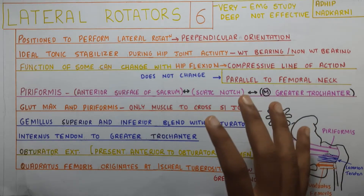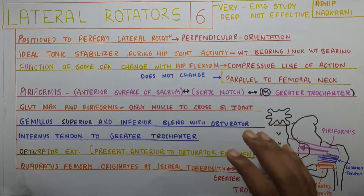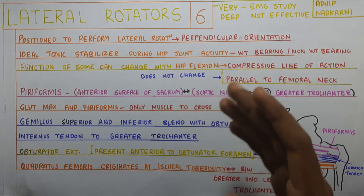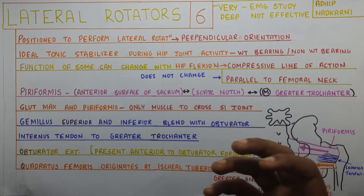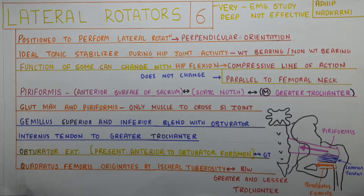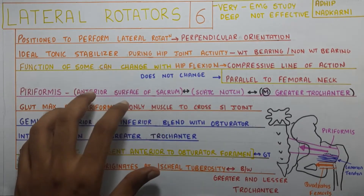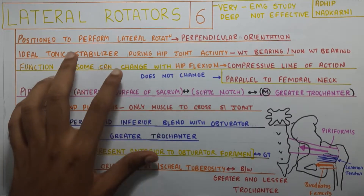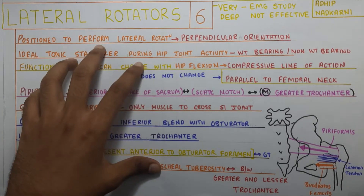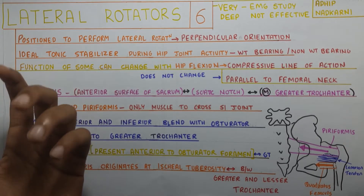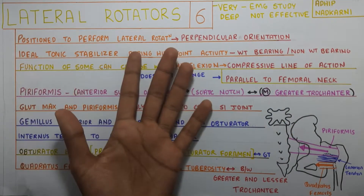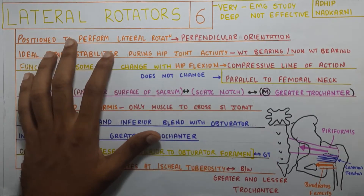An important point: these muscles are very deep, so EMG studies are not that effective on them, and the data collected is quite limited compared to other superficial muscles. Also, the gluteus medius, minimus, and maximus can do lateral rotation — but these six are the main pure lateral rotators. The glute medius, minimus, and maximus can cause lateral rotation according to hip position: on extension they'll cause lateral rotation, whereas on flexion they'll cause medial rotation.